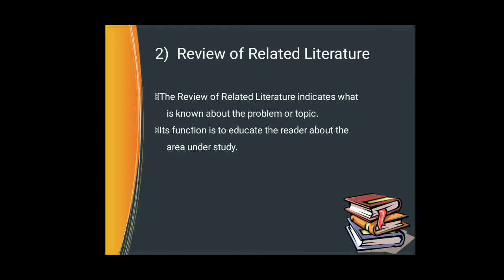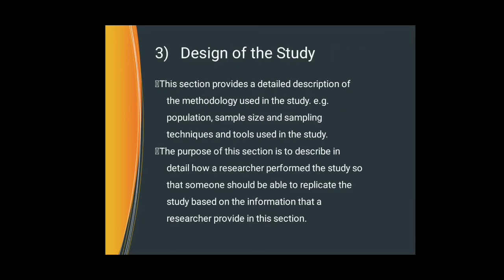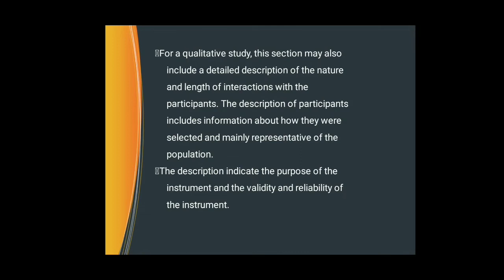Next is the review of literature. The review of literature indicates what is known about the problem or topic; its function is to educate the reader about the area under study. Next is the design of the study. This section provides the detailed description of the methodology used in your study — for example, population, sample size, sampling techniques, and tools used in your study. The purpose of this section is to describe in detail how a researcher performed the study so that someone should be able to replicate the study based on the information provided.